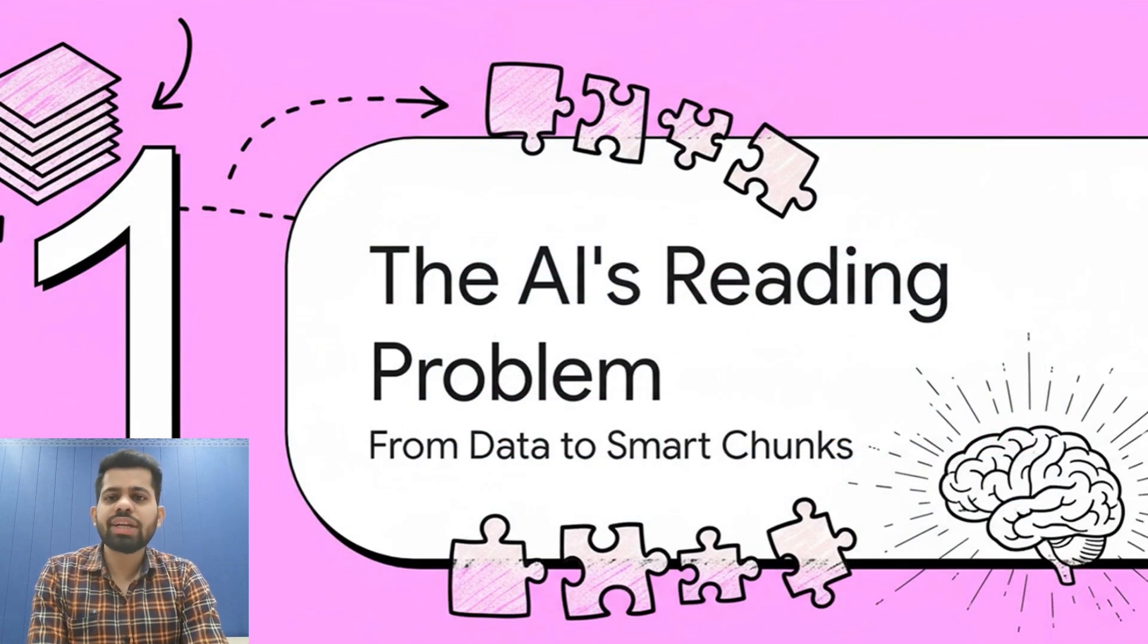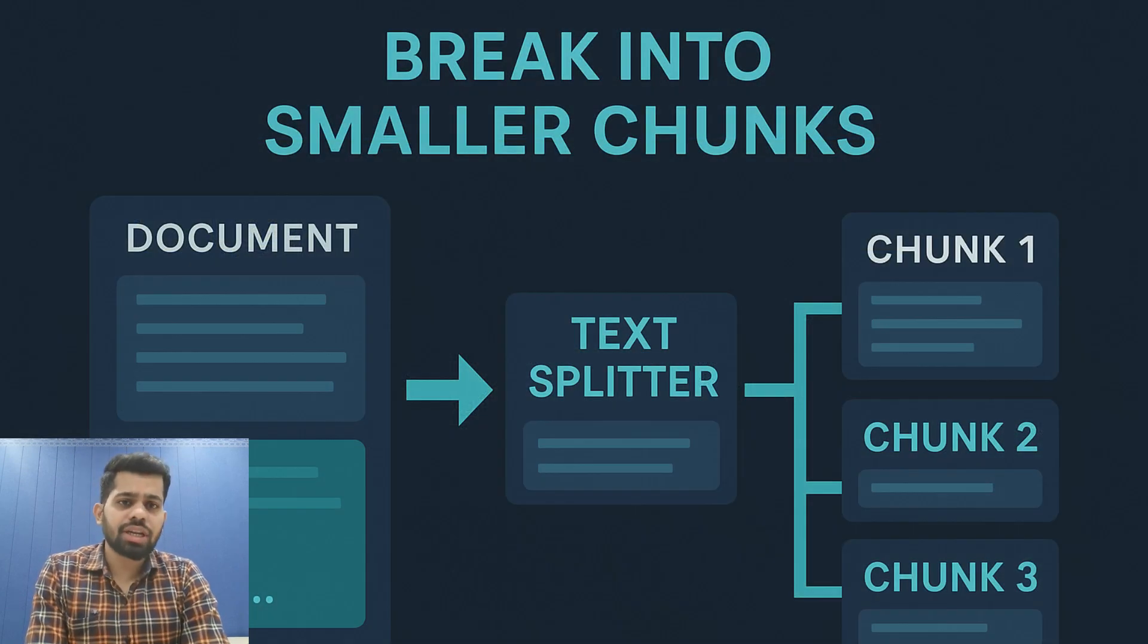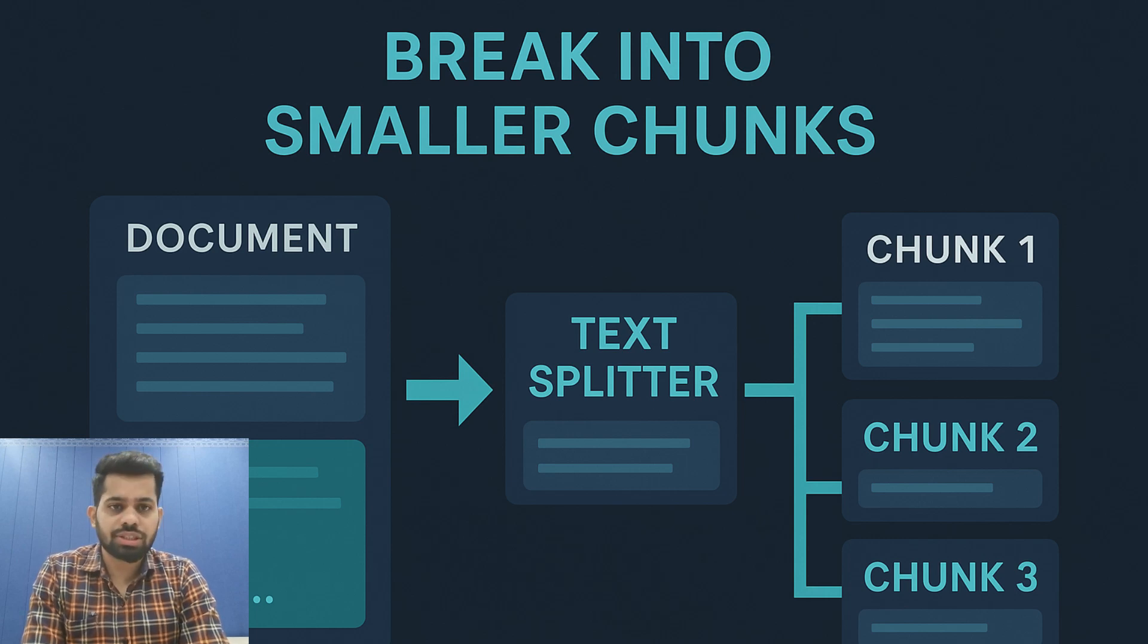Now, here is where it gets interesting. You have loaded your documents, but they are probably way too long. A 50-page PDF is one document, but you cannot feed that all at once to an LLM or meaningfully search it. So text splitters break your documents into smaller manageable chunks, but not randomly - intelligently.